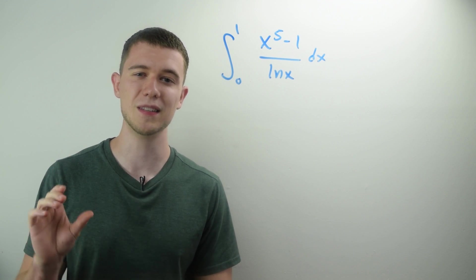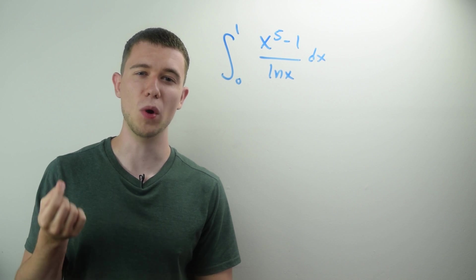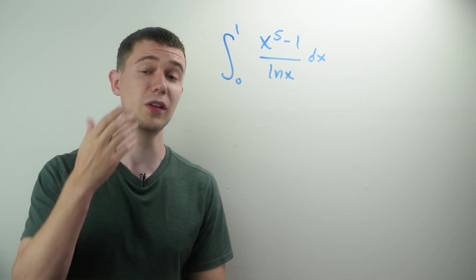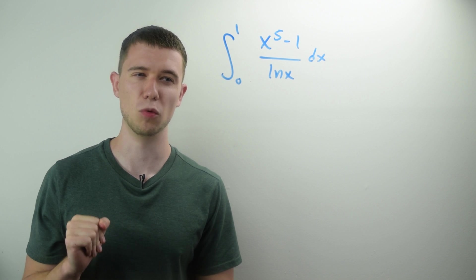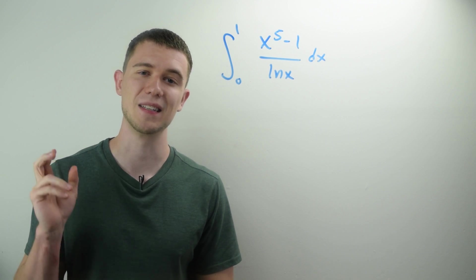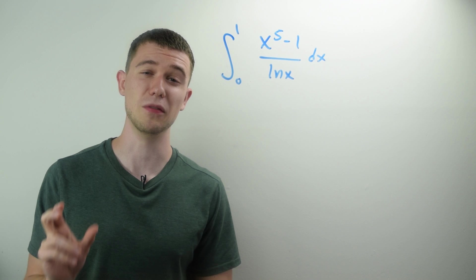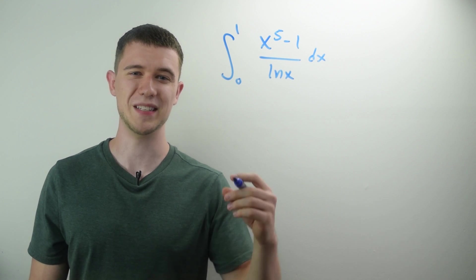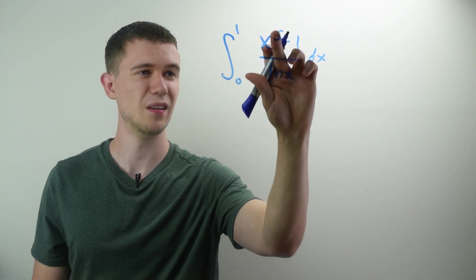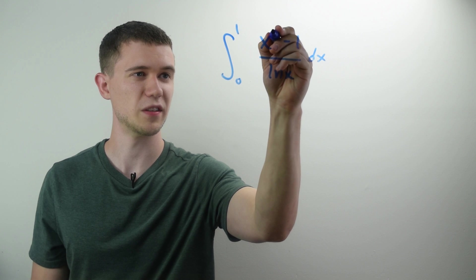So what I'm going to do is I'm going to need to define this as a function of two variables. And the tricky part usually with this is figuring out what the other variable should be. Clearly one of these variables is x, but what should the other variable be? Well in this case the best choice is the exponent of x. And so what I'm going to do is instead of having a 5, I'm just going to call this y.